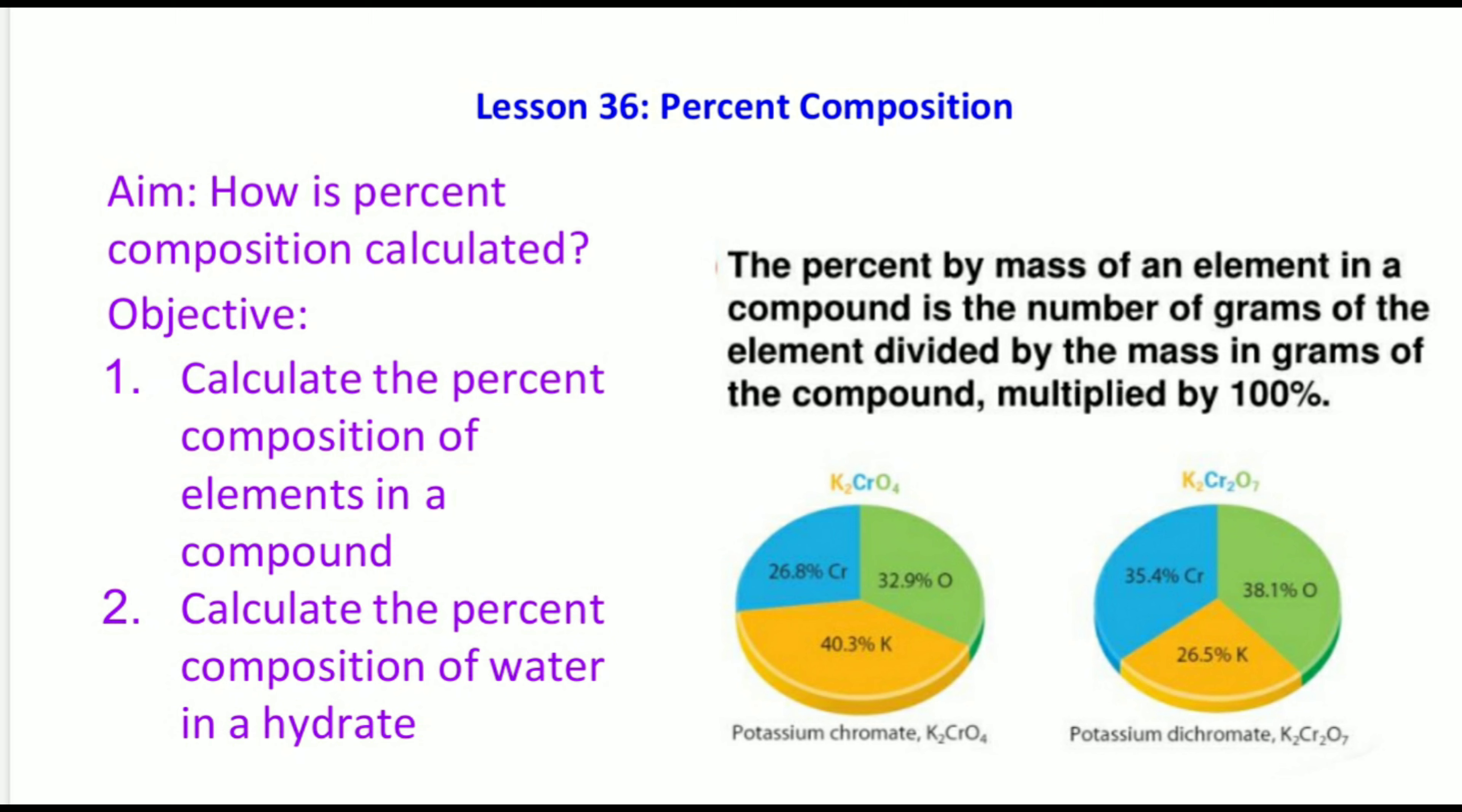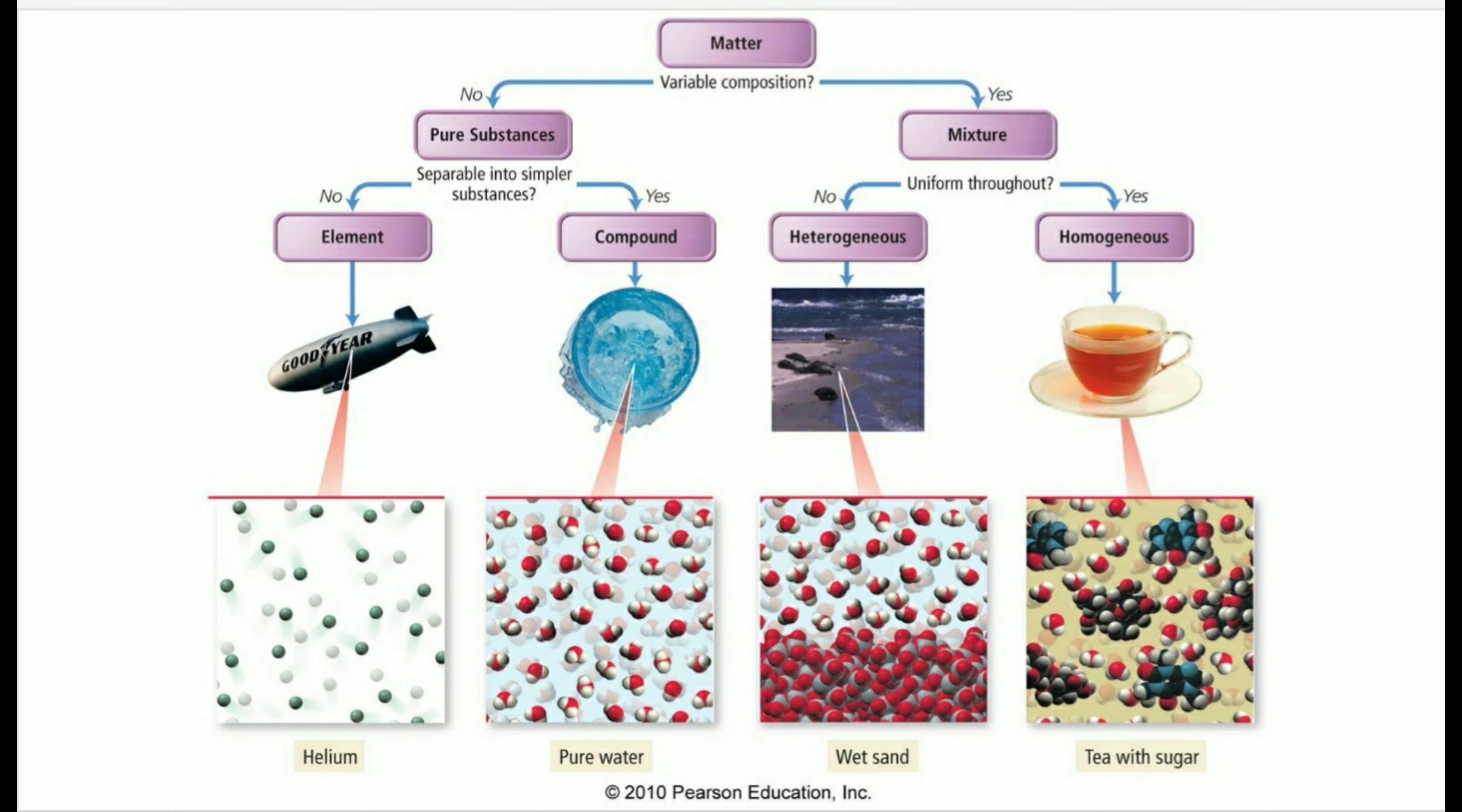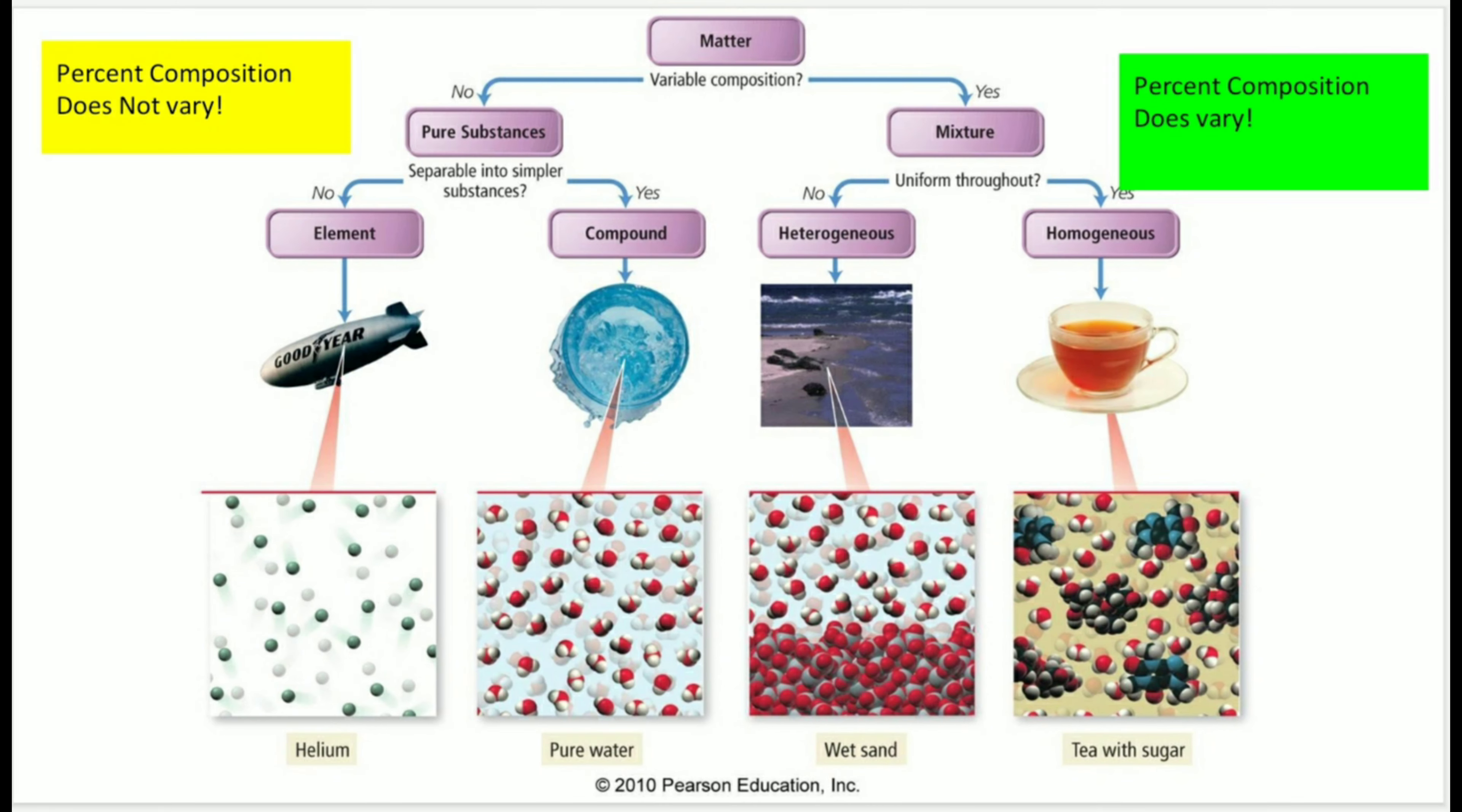Percent composition by mass of an element represents how much of the total mass of a compound is contributed by each element. Percent composition by mass directly relates to how we classify different types of matter. Matter that is a pure substance, which includes either an element or a compound, has a uniform percent composition by mass. That means the percent composition by mass never varies.